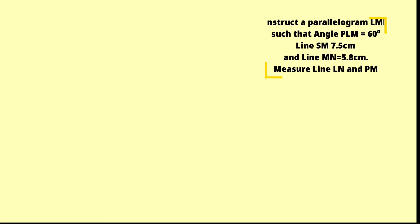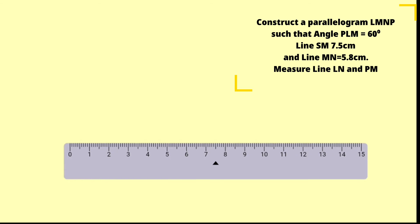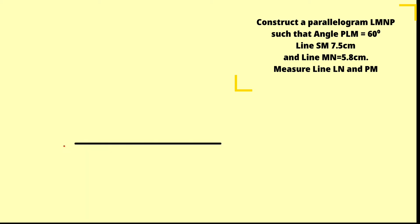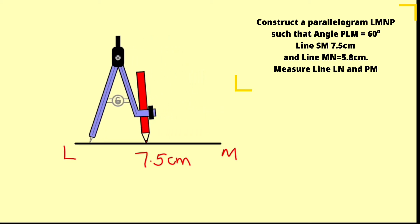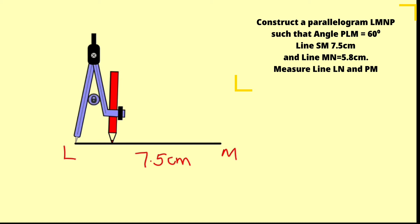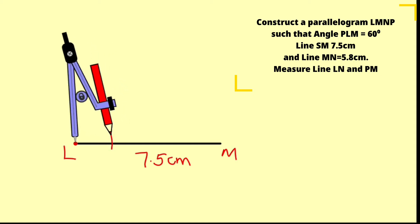Let us start by constructing our base. The base is 7.5 centimeters. Using my ruler, I measure 7.5 centimeters — this is L, and this is M. Now we are going to construct a 60-degree angle at point L. Let me bring my compass to point L and use a convenient radius. We construct an arc to cut line LM and extend it upward.